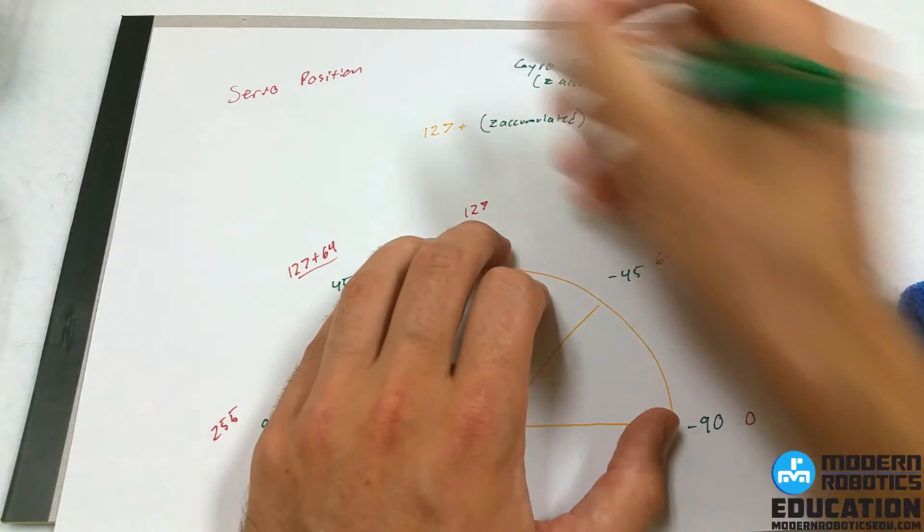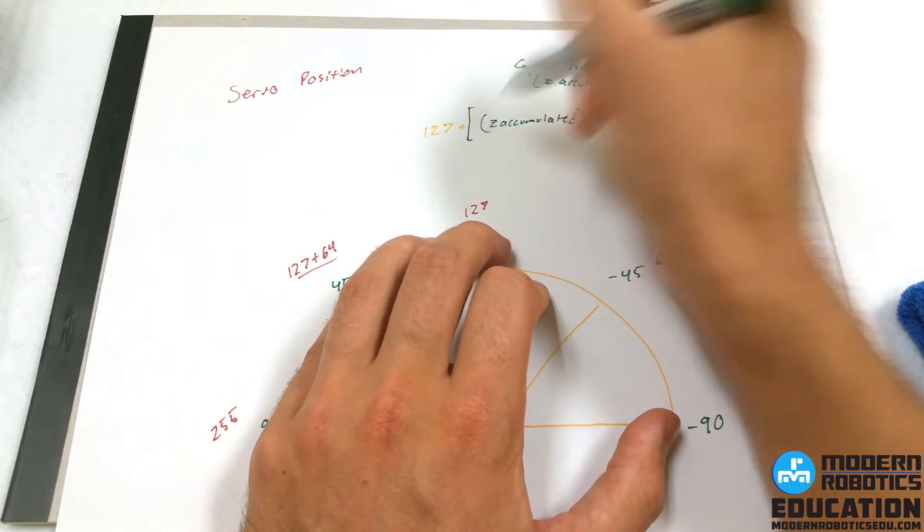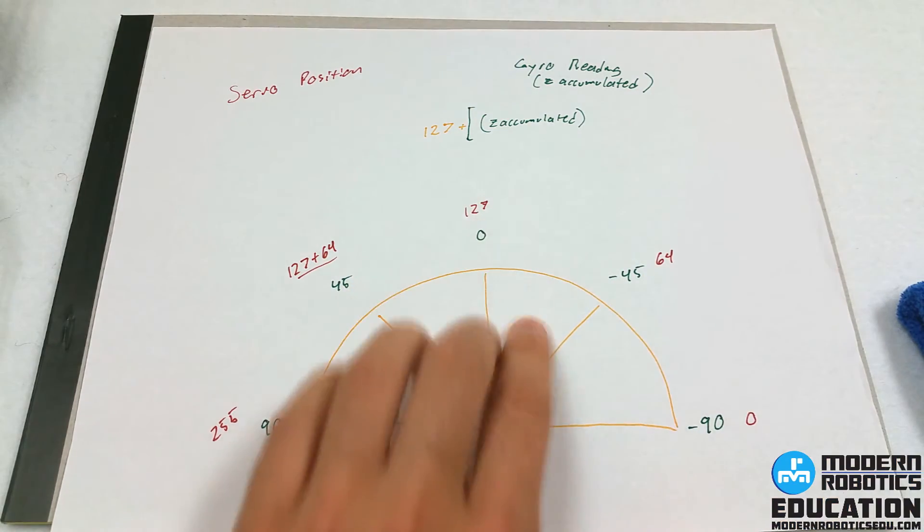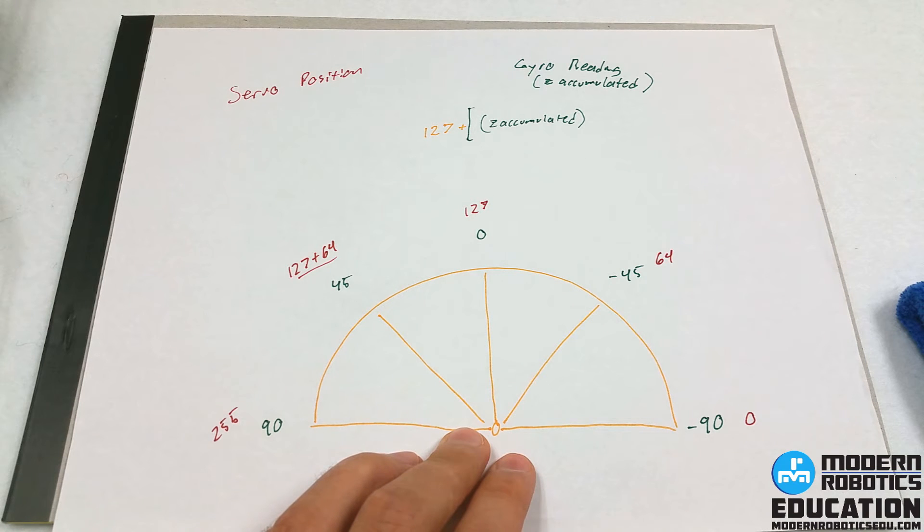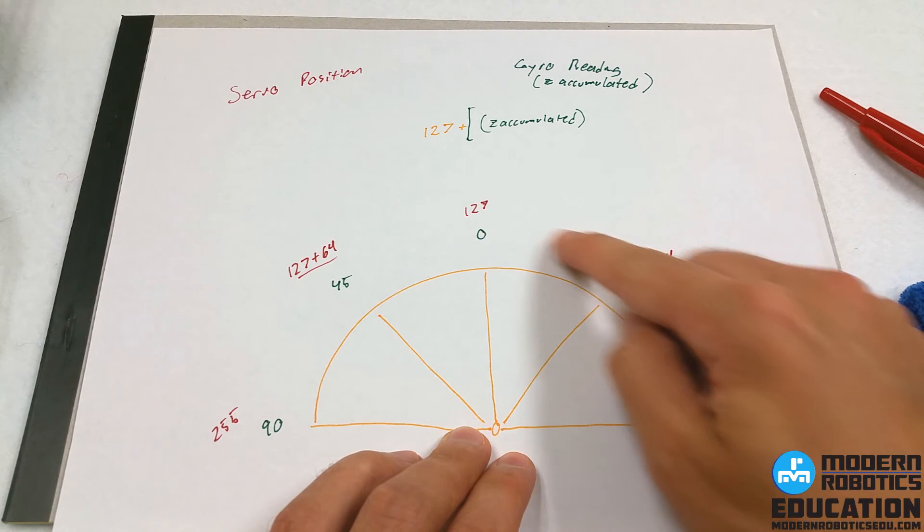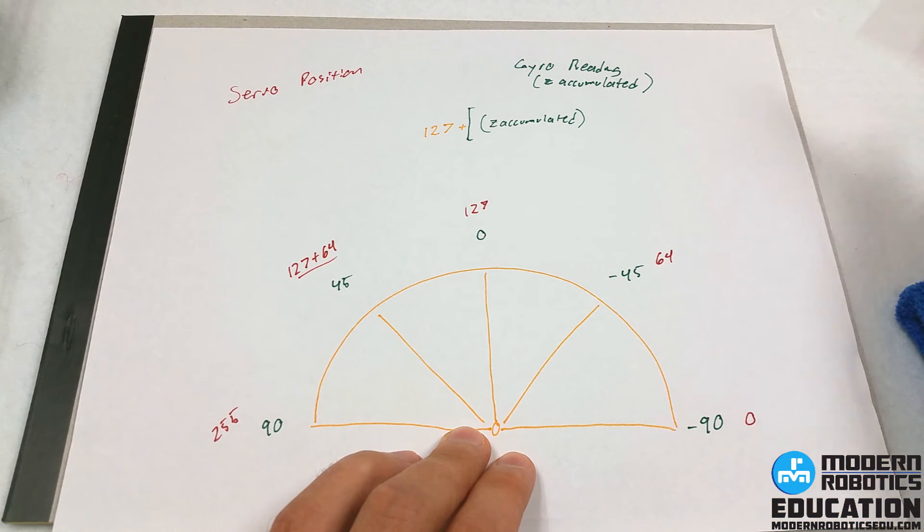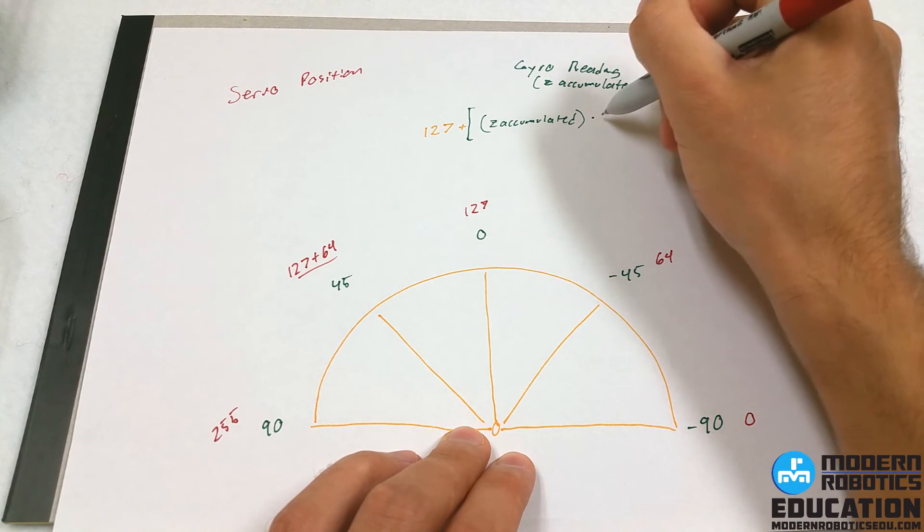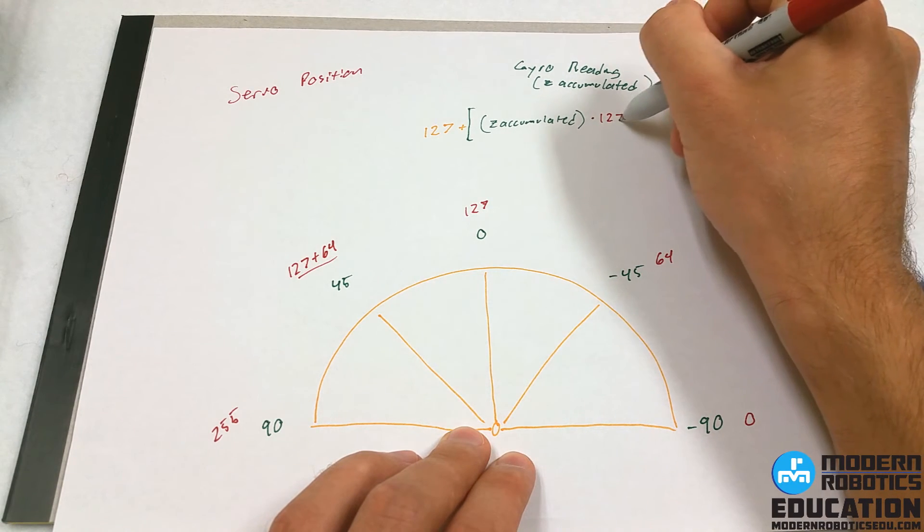And that guy is going to be multiplied by 128, because there's 128 positions here. So I'm going to say times 128.